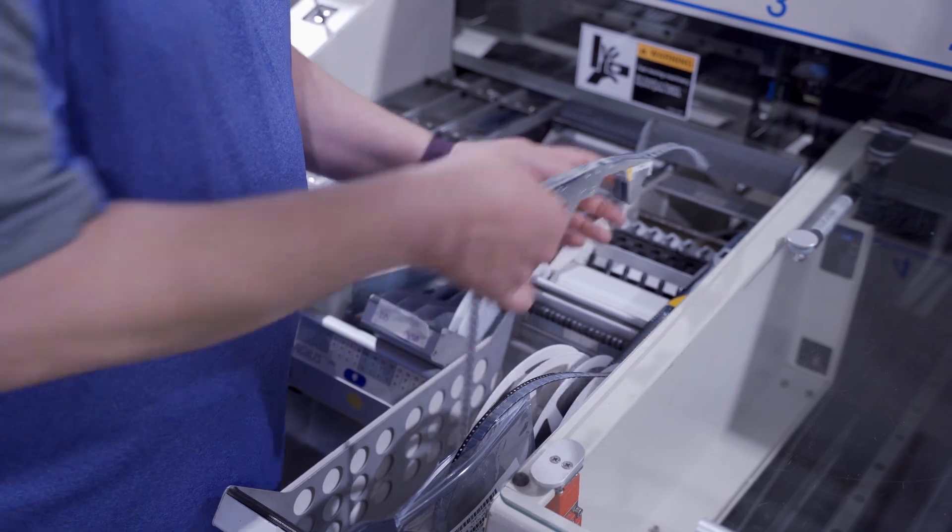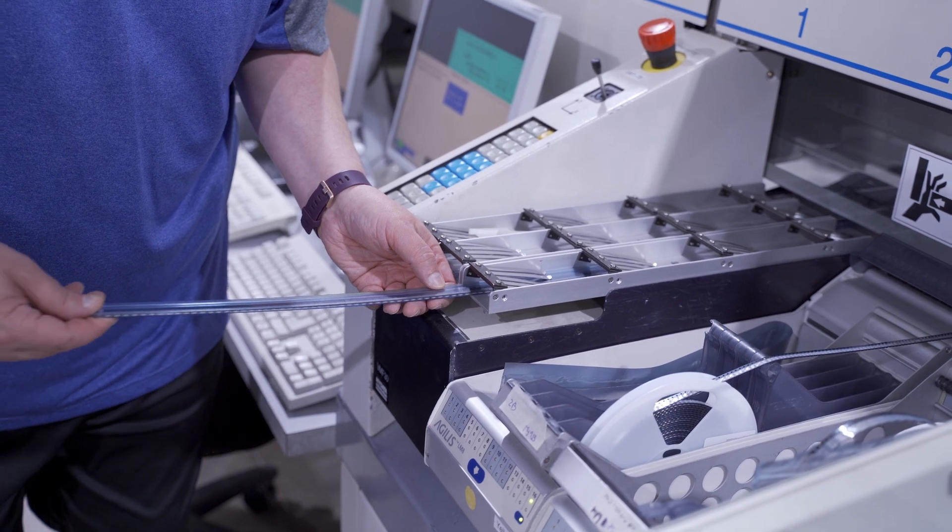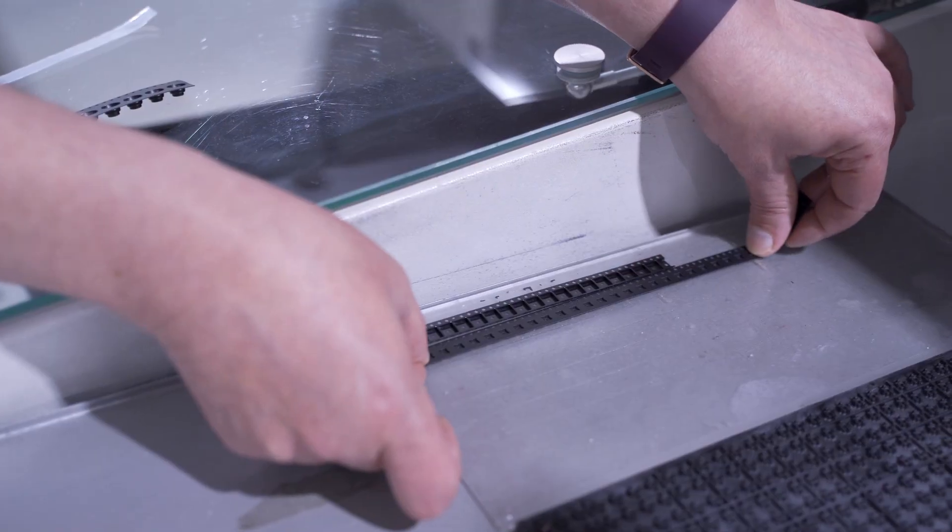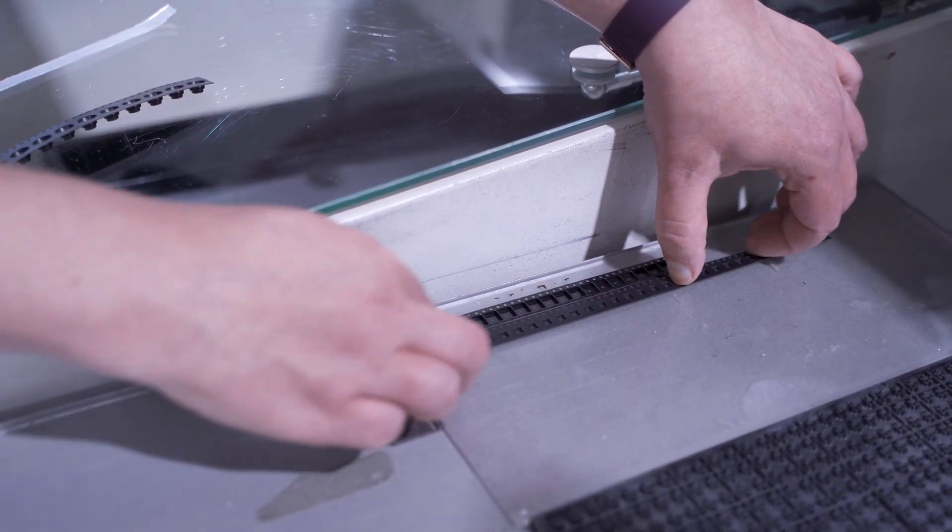The NPI pick and place machines can accept full reels of parts, but also have more options for low volume part feeders, like this large tray wagon for cut tape or loose parts.